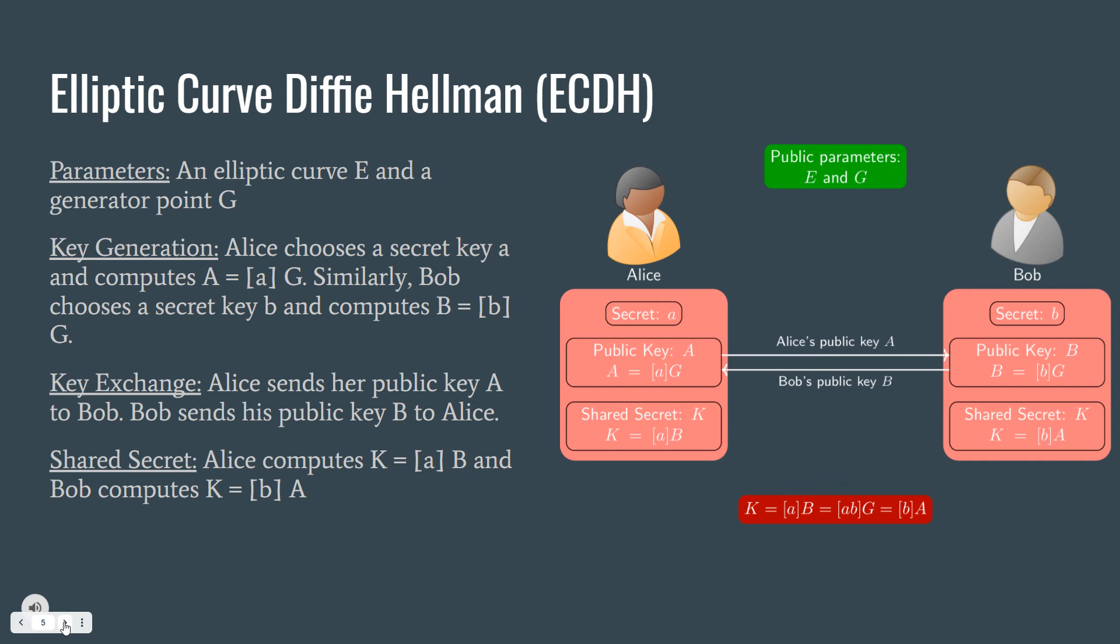In the key exchange step, they exchange the public keys A and B. And in the final step, Alice computes A times capital B and Bob computes B times capital A.